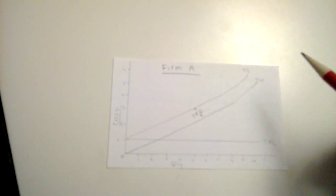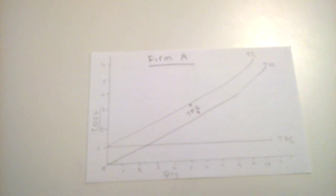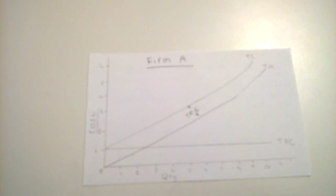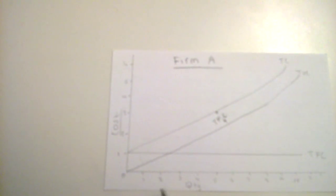Let's go on to total variable cost. Total variable cost is a little different. Total variable cost changes with the level of output, and that is why when the firm is not producing anything, total variable cost is at zero. As the firm starts producing, total variable cost increases.